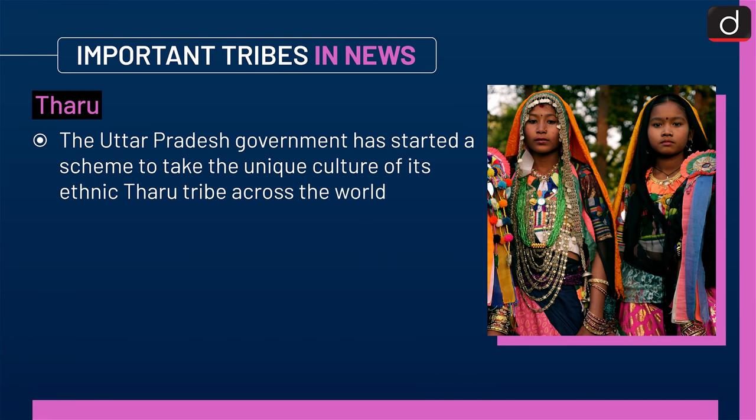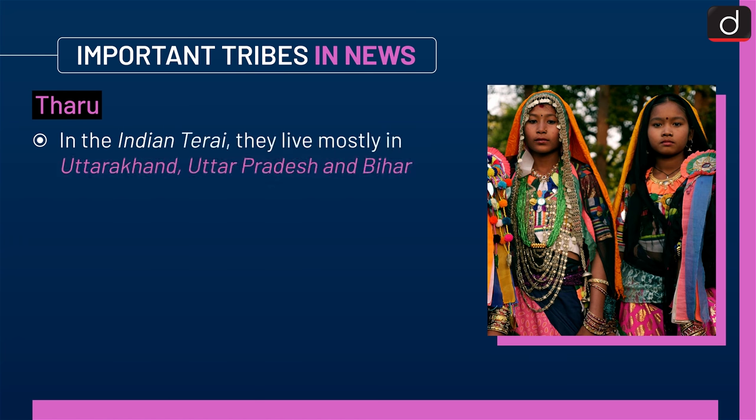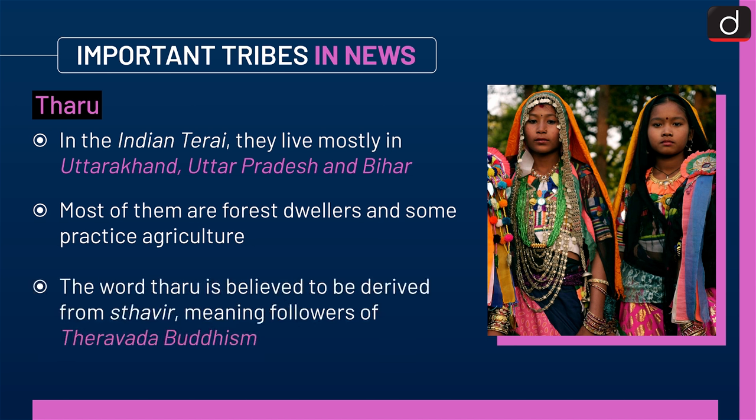Number one in tribes in news is Tharu. The Uttar Pradesh government has started a scheme to take the unique culture of its ethnic Tharu tribe across the world. This tribe belongs to the Terai Lowlands amid the Shivaliks or Lower Himalayas and lives in both India and Nepal. In the Indian Terai, they live mostly in Uttarakhand, Uttar Pradesh, and Bihar. Most are forest dwellers and some practice agriculture. The word Tharu is believed to be derived from Sthavir, meaning followers of Theravada Buddhism.